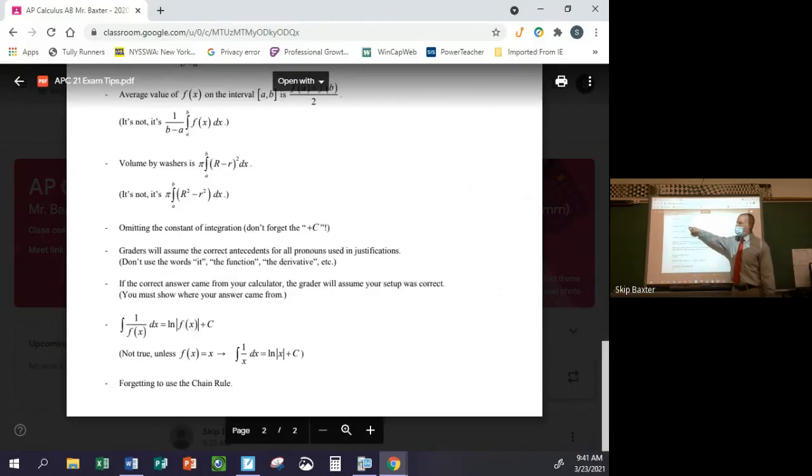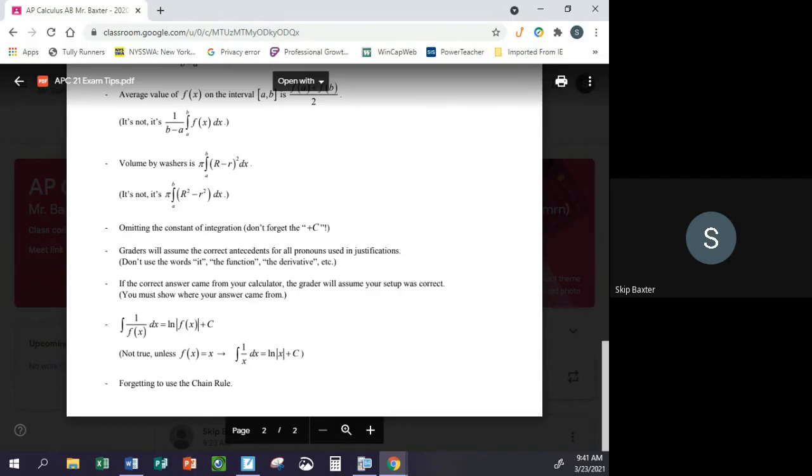This mistake I have seen quite often. Volume by washers is not pi times big R minus little r squared. It's pi R squared minus pi r squared. Right? Having the square outside the parentheses is not the same as having the square on each term. Don't forget people forgetting the plus C. On a free response question that deals with a differential equation, if you forget the plus C, that's most of the points. You'll get at most one out of four or one out of five for that question from forgetting the plus C. Don't forget that.